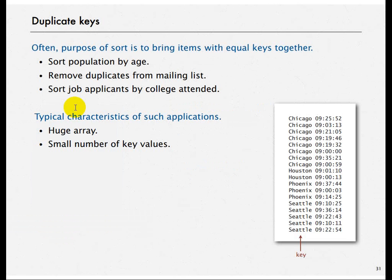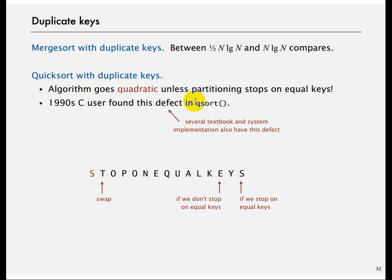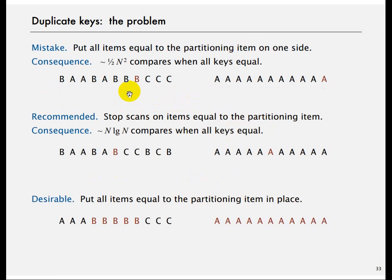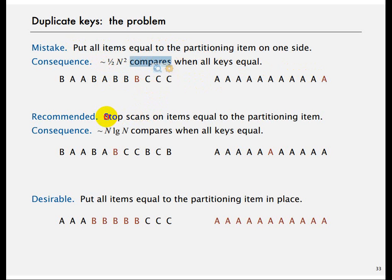Duplicate keys are an important issue. When there are many duplicate keys, Quicksort degenerates very fast to O(N²). This was actually discovered when someone was doing runtime analysis. If you put all items equal to the partitioning key on one side, you will end up doing O(N²) comparisons when all keys are equal. What is recommended instead is to stop scans on items equal to the partitioning item.